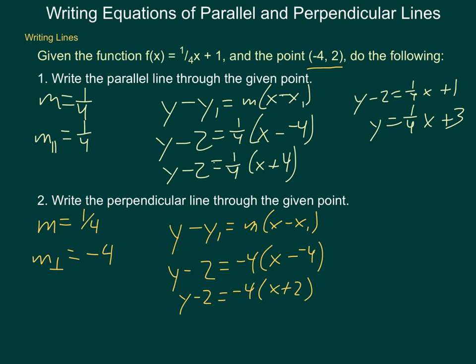Distributing, that is a valid equation by the way, but distributing and carrying it out further, y minus 2 equals a negative 4x minus 8. Adding 2 to each side, y equals negative 4x minus 6. So given a point and a line, we can create either a parallel line or a perpendicular line.